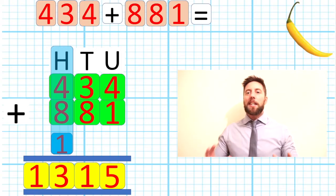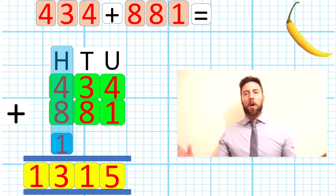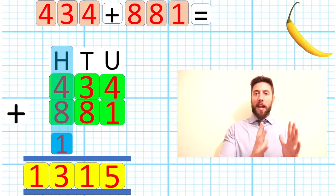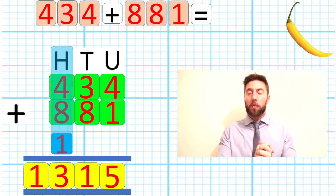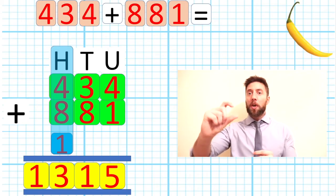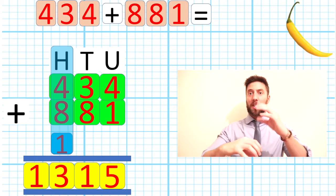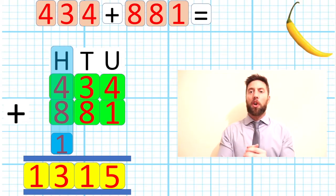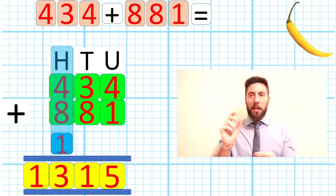This is called regrouping or bridging, depending on where in the world you're from. Means the same thing. We are just moving our number digits into the next column when we need to. We understand that if we were to add an 8 and a 7, we get 15, which is a 10 and a 5, so we can move that 10 into the next column waiting for us.